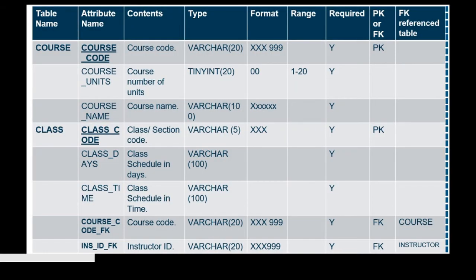For the course table, we have course_code as our primary key. Its content is course code and the type is VARCHAR. The format is as shown — it's just an example. The range is not specified, and we put it as required because a primary key should not be null. Then we have course_units, which is the number of units, specified as TINYINT with a format as shown, and it is also required. And we have course_name, which has a type of VARCHAR with a size of 100, and its format starts with a capital letter followed by small letters.